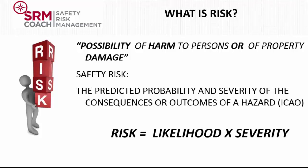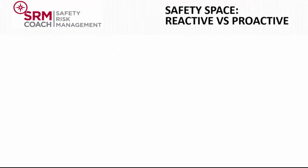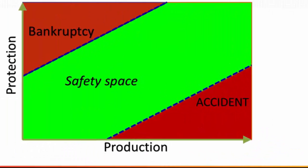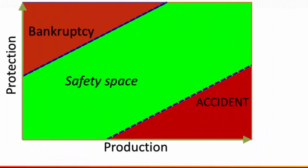In our SMS, we also call this safety risk to distinguish it from other types of risk such as financial, health, and environmental. When we talk about safety risk, we mean the risk of an aviation accident happening. The management dilemma of running an aviation organization is to decide how much resources we need to dedicate to protecting ourselves from an accident.